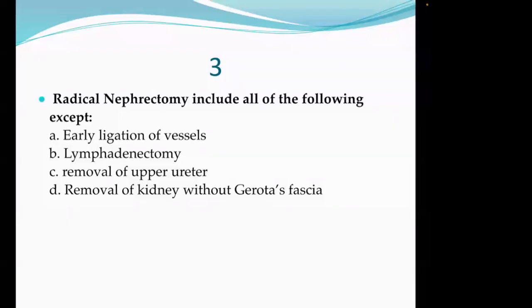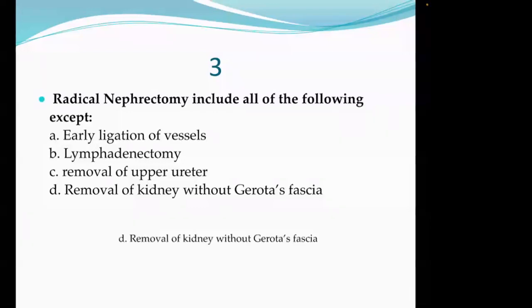Radical nephrectomy means removing the kidney with Gerota's fascia, plus adrenal gland, plus upper ureter, plus surrounding lymph nodes. Lymph nodes are removed, upper ureter is removed. Removal of kidney without Gerota's fascia is wrong - kidney should be removed with Gerota's fascia. So answer D (without fascia) is incorrect.